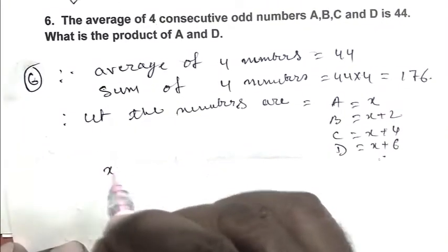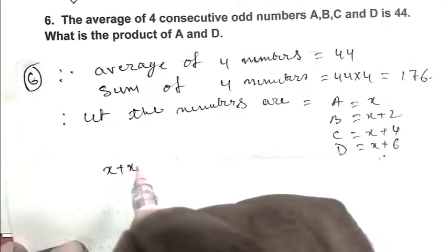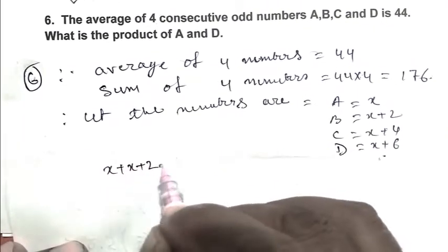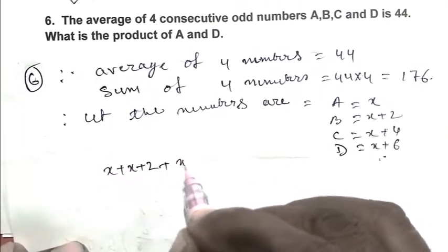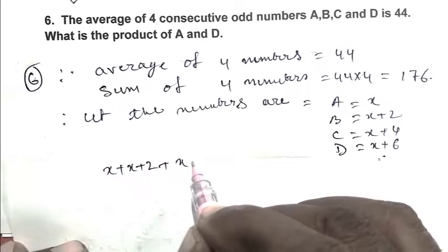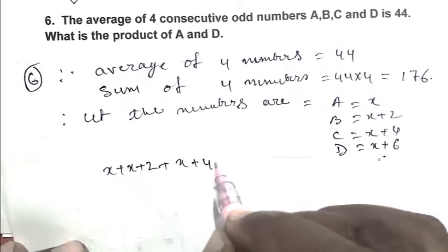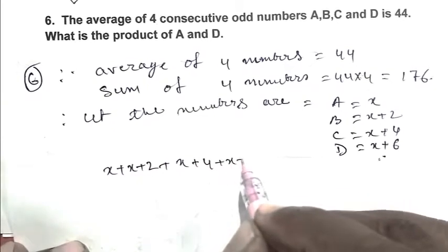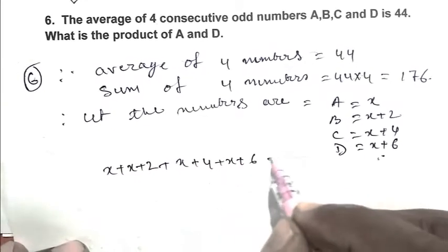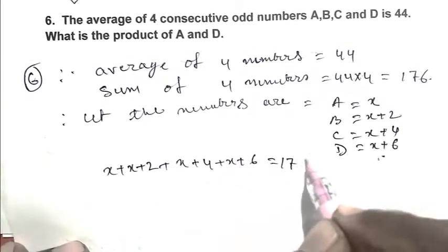So the sum of all numbers equals 176: X plus (X plus 2) plus (X plus 4) plus (X plus 6) equals 176, which gives 4X plus 12 equals 176, so X equals 41.